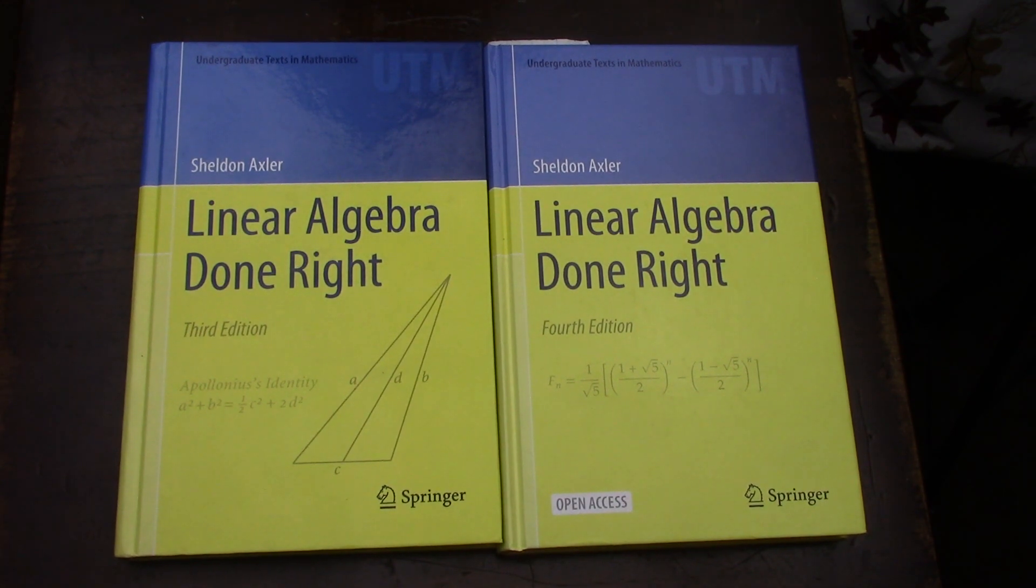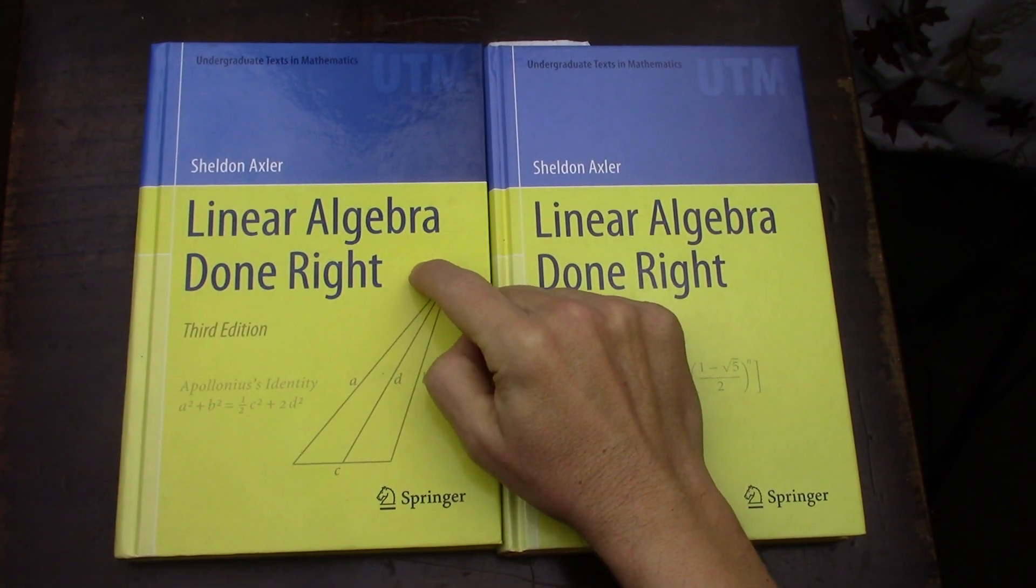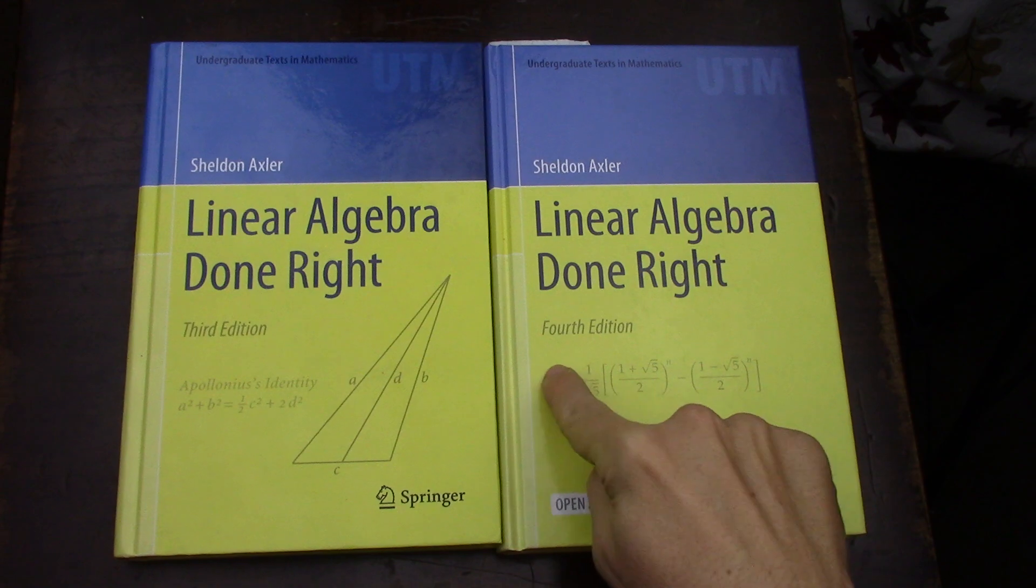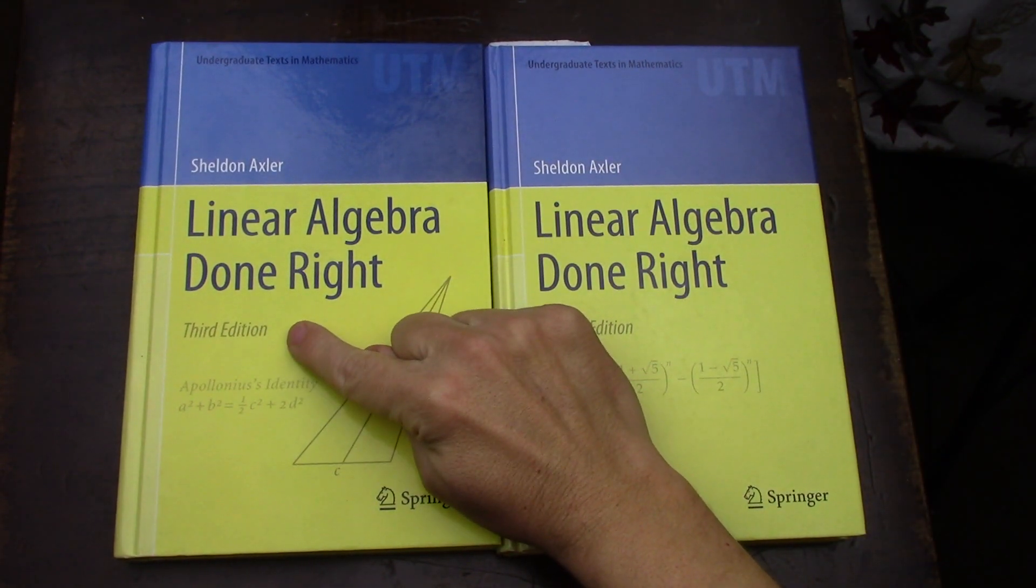I was originally planning to cover Axler's Linear Algebra Done Right after I finished Friedberg, Insel, and Spence. I didn't care about which edition - I knew the fourth edition was out and I already had the third edition.